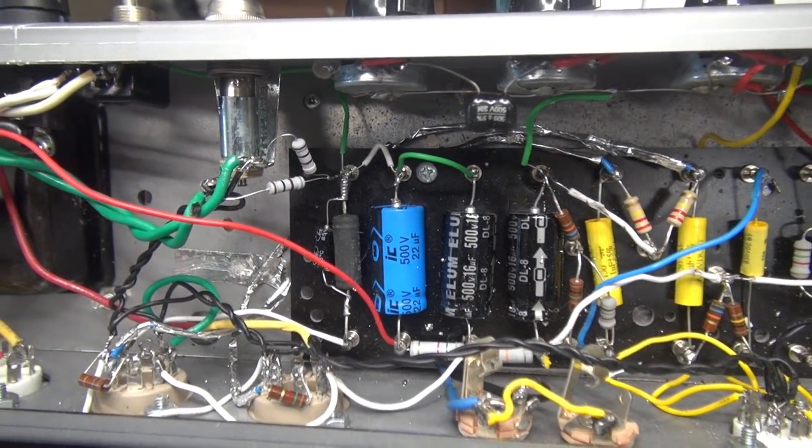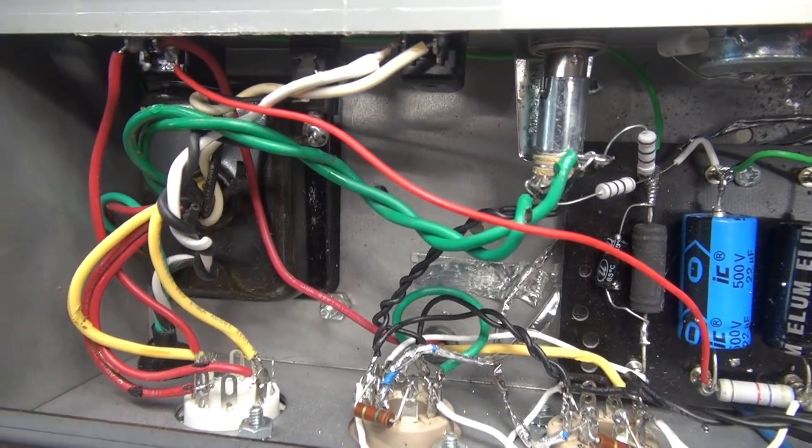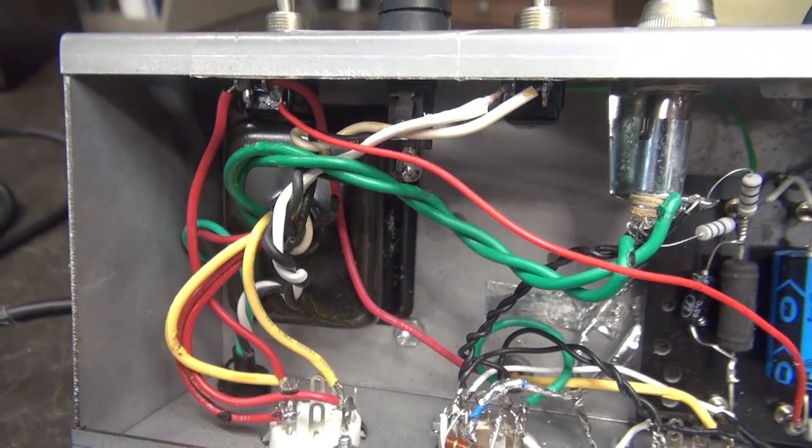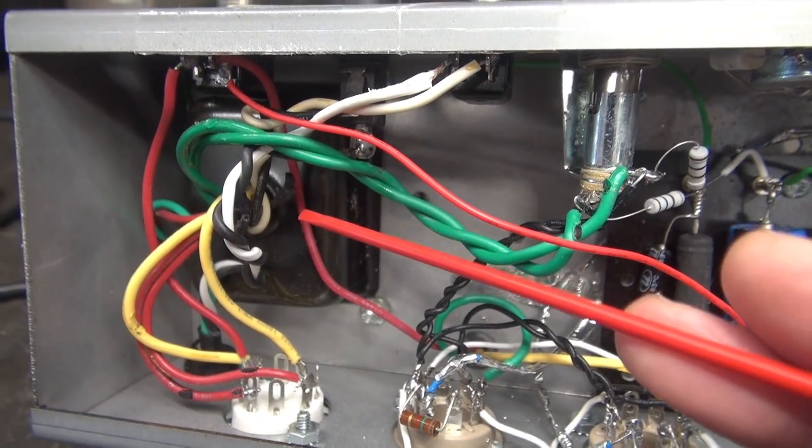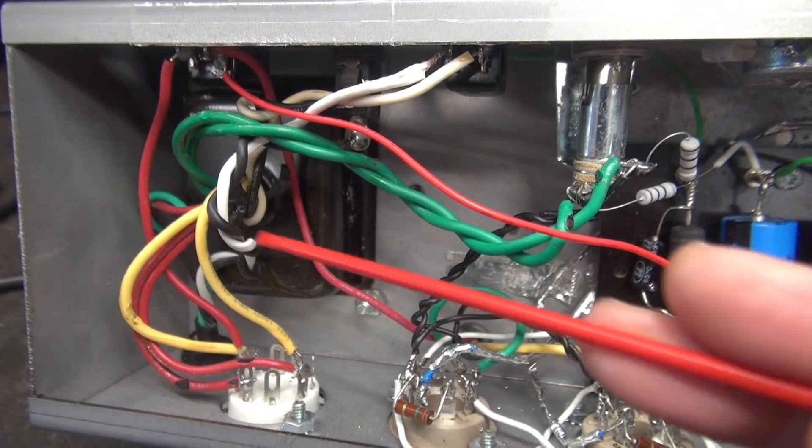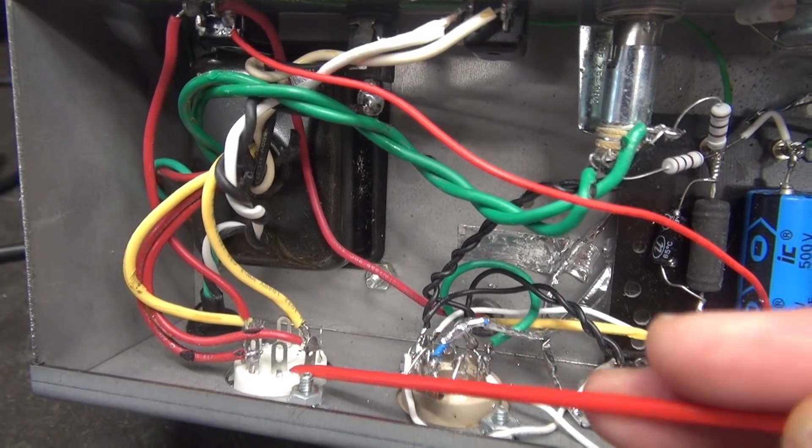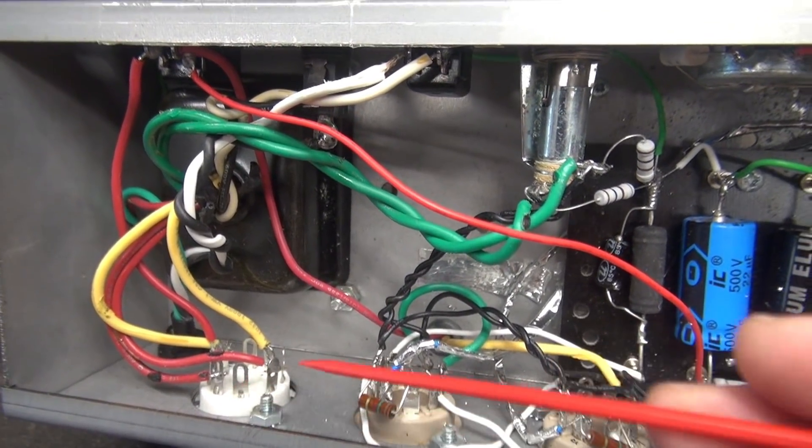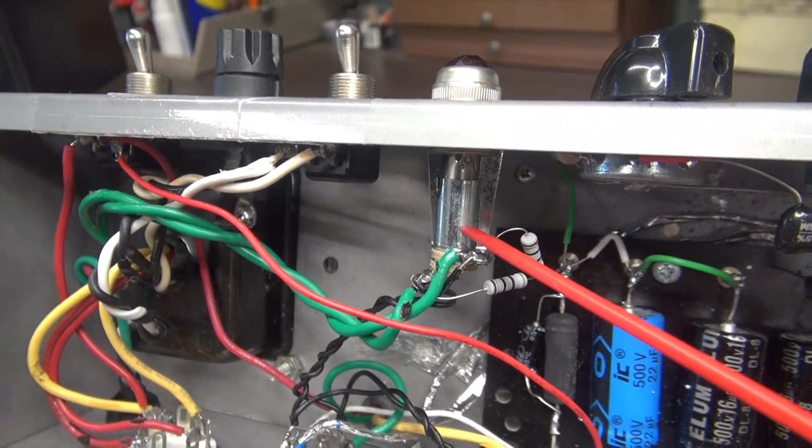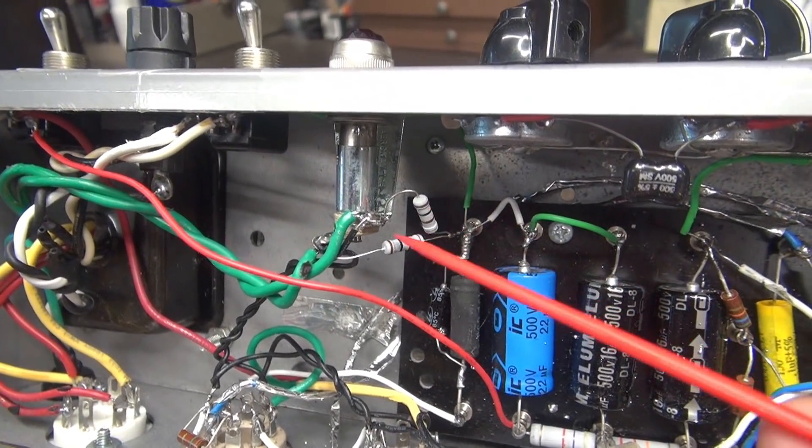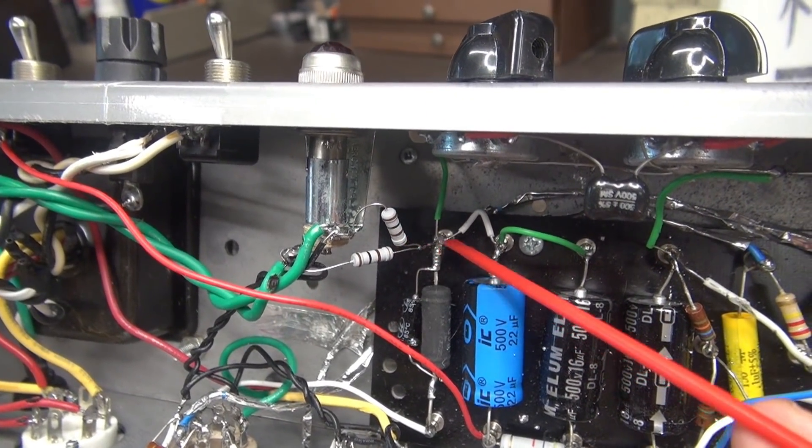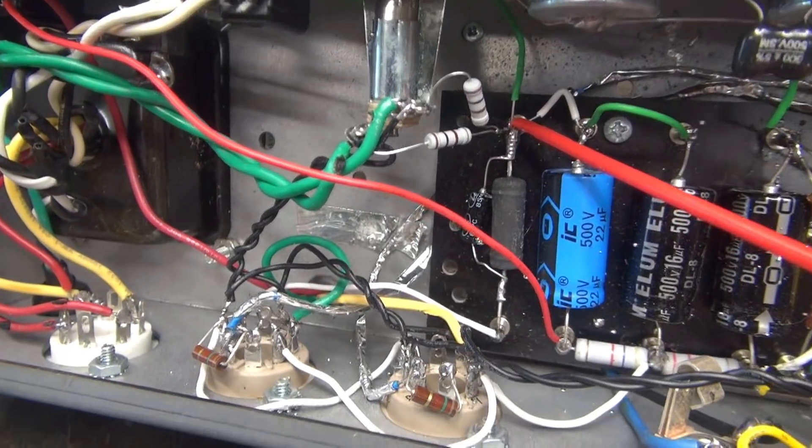Bottom side inspection of the 5E3 amp. We're going to give this a real careful look over, try to spot any problems. Power transformer, got our primary leads here, high voltage leads going to the rectifier tube, filament lines that go up and hit the lamp assembly with 100 ohm resistors for balancing.